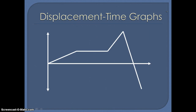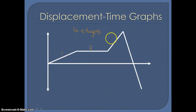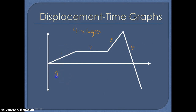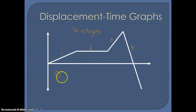Let's start with displacement-time graphs. The graph in front of us is split up into four stages: the first part, the second part, the third part, and the fourth part. In the first stage of motion, as we move across to the right, the graph is gradually moving upwards. So as time passes, the displacement of the particle is increasing — we'd say that we have a constant velocity.